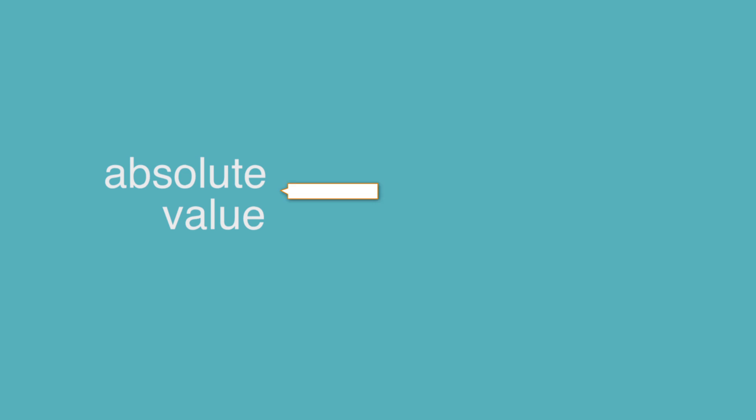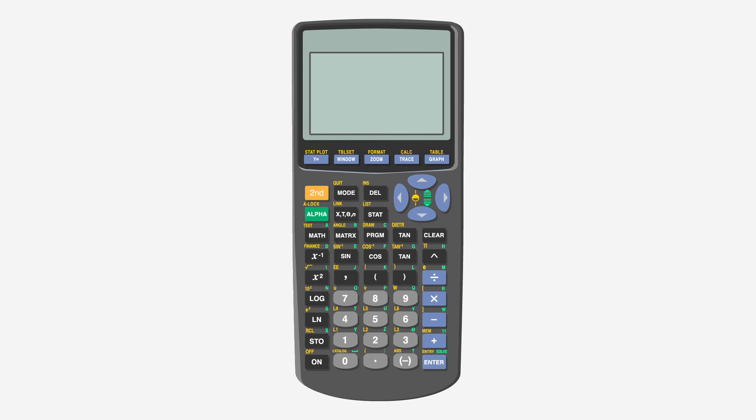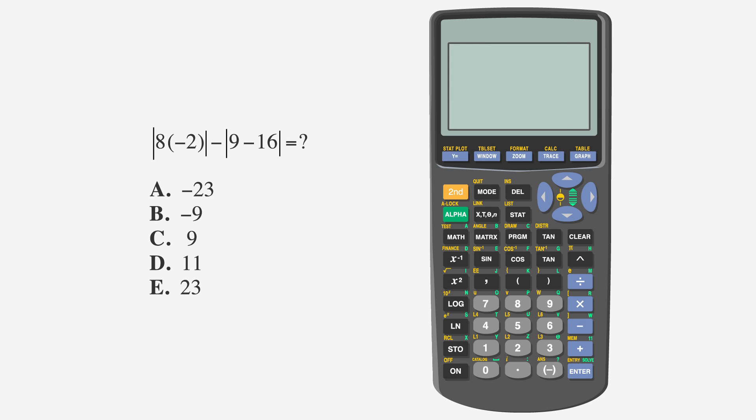Now, let's look at finding the absolute value using our calculator. As you may recall, the absolute value is the distance from zero. Most calculators have an absolute value key. On the TI-84, you can find it by typing second catalog enter. Let's try this on a mock ACT problem.